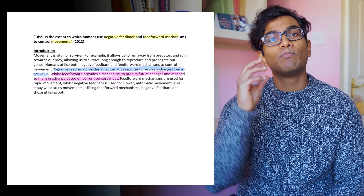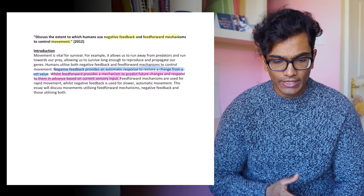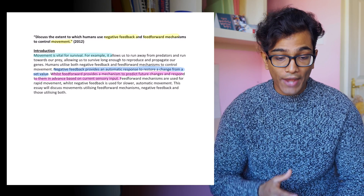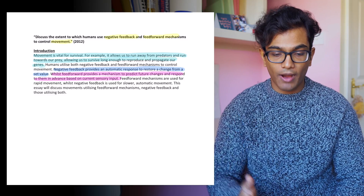What you can do is define the importance of movement — why is it important? You can say something like: movement is required for survival by allowing us to run away from predators and run towards our prey. Defining the key concepts in such a way immediately tells the reader this person knows what's going on, they can identify what's important in the question and they understand those features. After you've defined the key concepts, move on and outline what your essay is going to cover and what your argument is going to be.